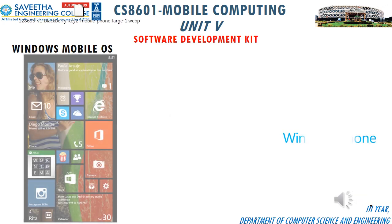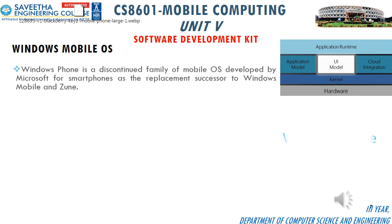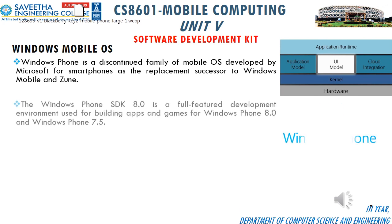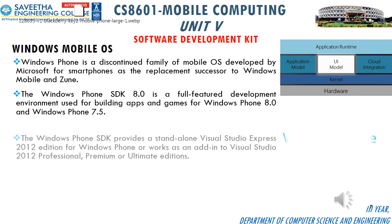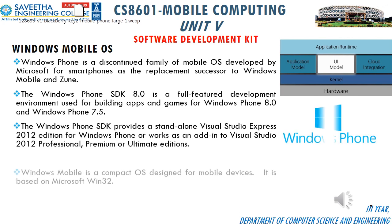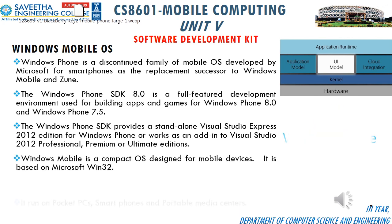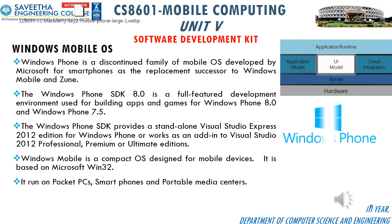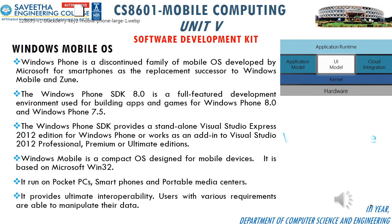Windows Phone is a discontinued family of mobile operating systems developed by Microsoft for smartphones, serving as the replacement and successor to Windows Mobile and Zune. The Windows Phone SDK 8.0 is a full-featured development environment for building apps and games for Windows Phone 8.0 and 7.5. It provides a standalone Visual Studio Express 2012 edition for Windows Phone, or works as an add-in to Visual Studio 2012 Professional, Premium, or Ultimate editions. Windows Mobile is a compact OS based on Microsoft Win32, running on pocket PCs, smartphones, and portable media centers, providing ultimate interoperability for users to manipulate their data.